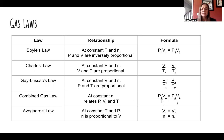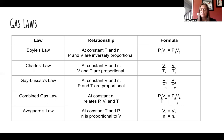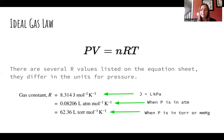Charles' law tells us that volume and temperature are directly proportional if we keep pressure and number of moles constant. Gay-Lussac's law tells us that pressure and temperature are directly proportional if volume is constant. The combined gas law keeps only the number of moles constant and relates pressure, volume, and temperature. Avogadro's law tells us that volume is proportional to the number of moles. All of these are derived from the ideal gas law.